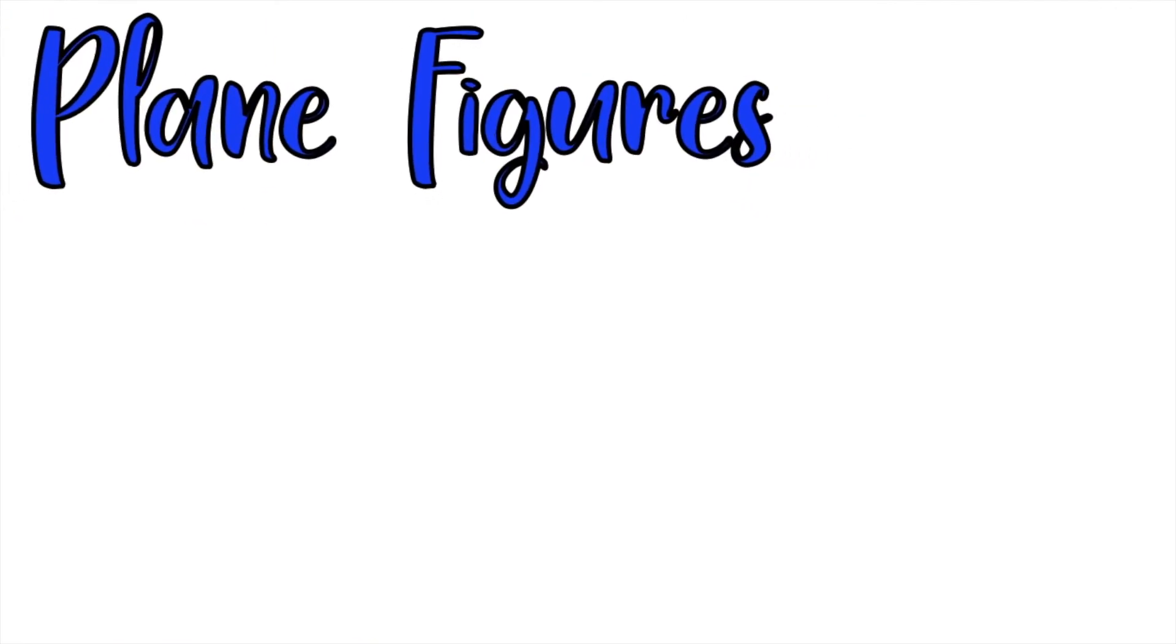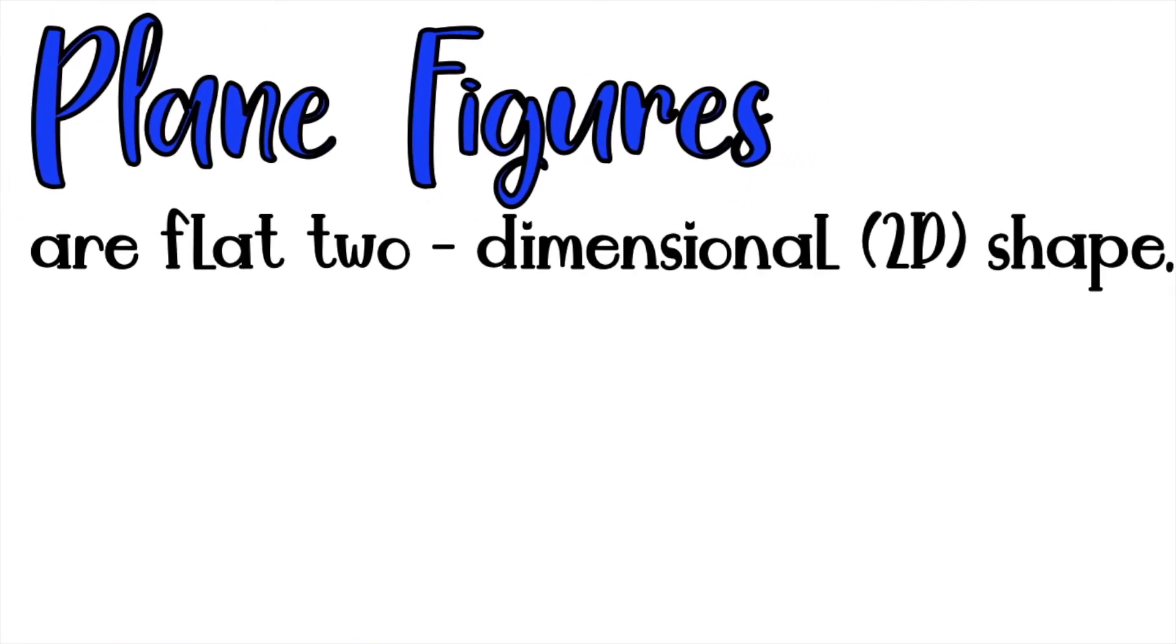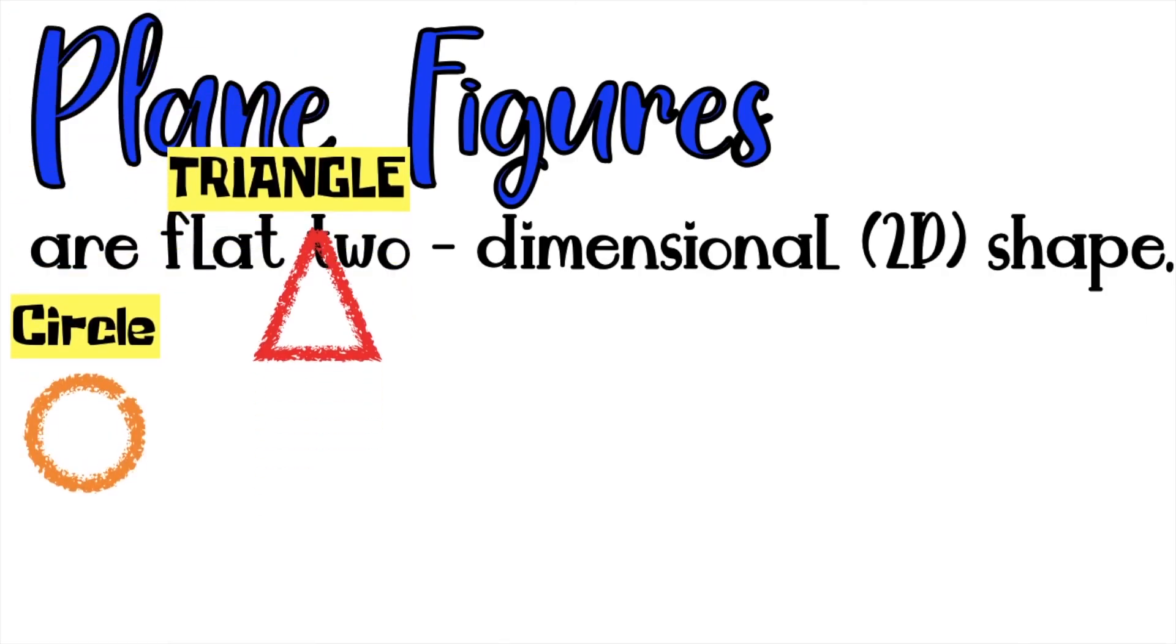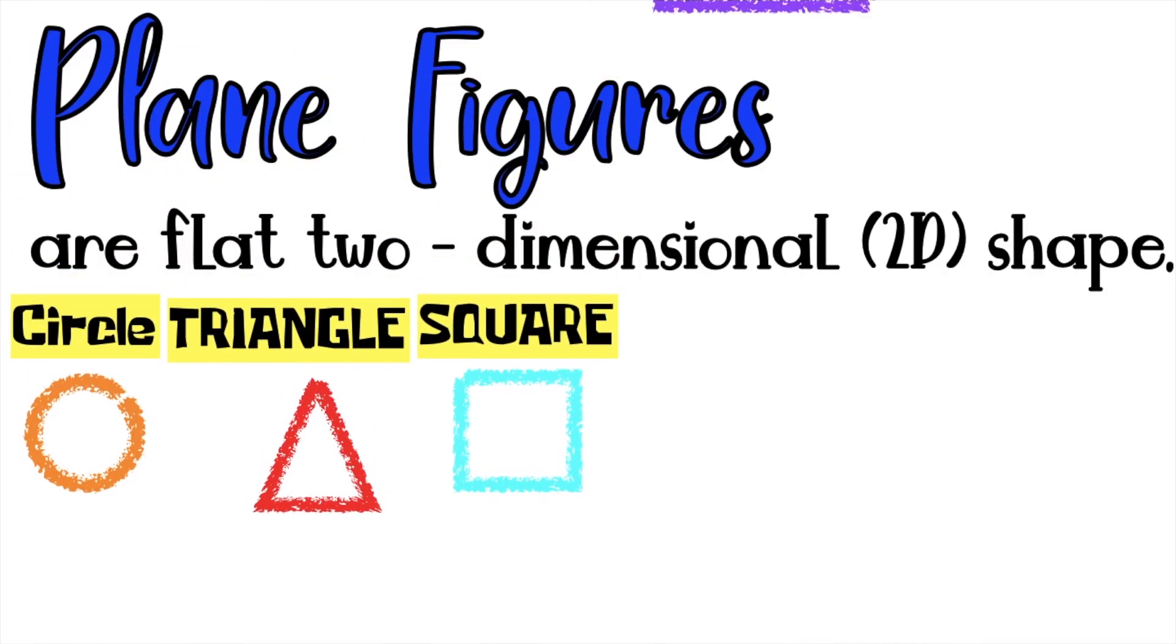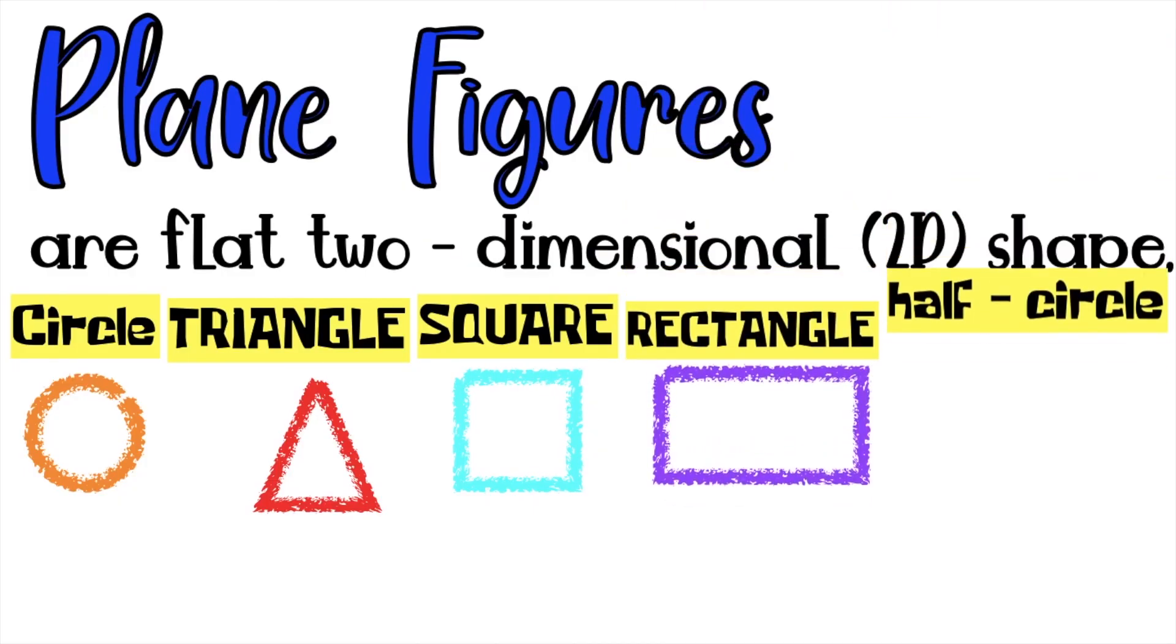So always remember, children, when you say plane figures, those are the flat two-dimensional shape. Again, it is a flat 2D shape. So we have circle, triangle, square, rectangle, half circle,